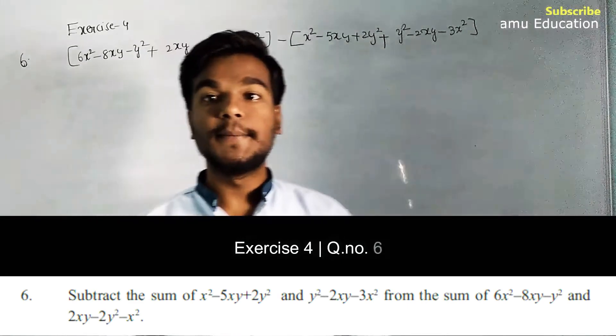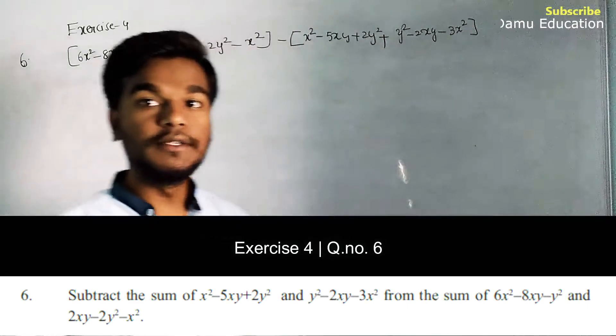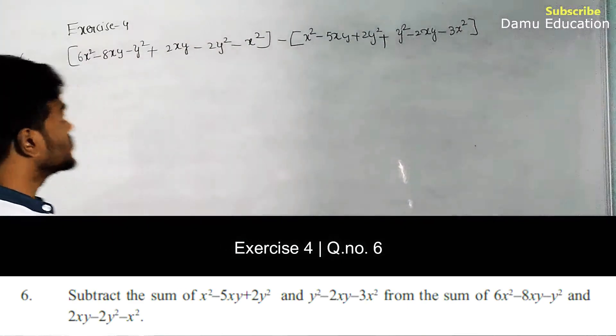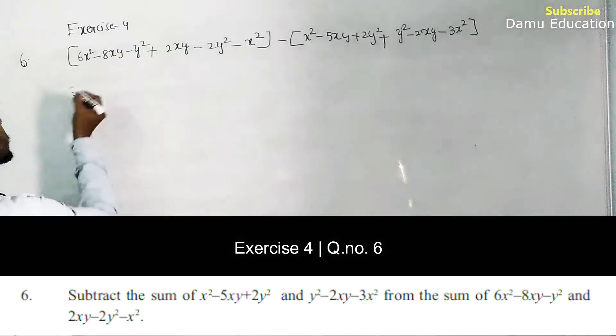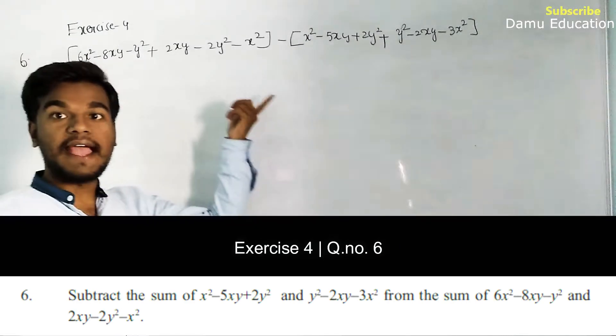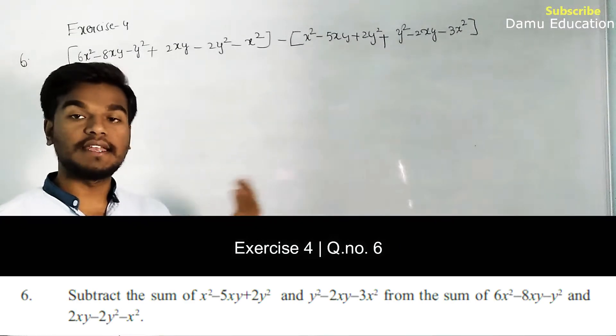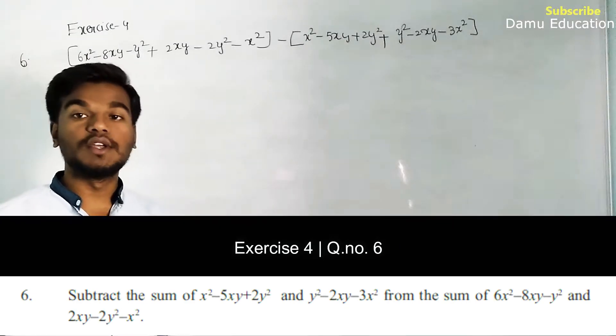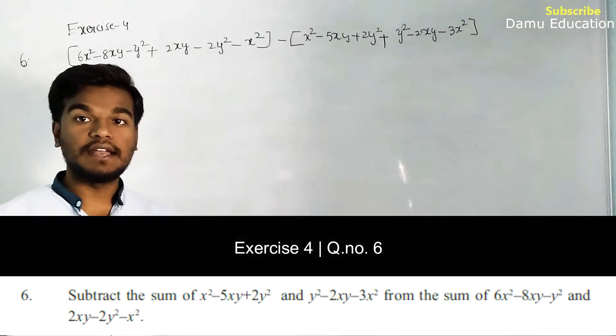First we have to find the sum of the first pair of expressions, then separately find the sum of the second pair, and then perform the subtraction.